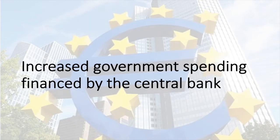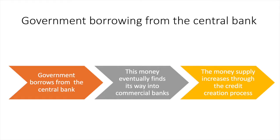First we'll look at what happens when the government borrows from the country's central bank. When the government borrows from the central bank it creates a debt to the central bank. The government then takes money out of the central bank and introduces it into circulation. Once the government spends this newly borrowed money it will eventually end up as deposits for commercial banks, and the credit creation process mentioned in the previous video will take effect.